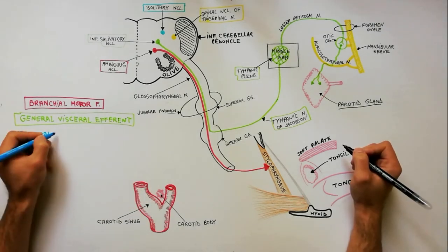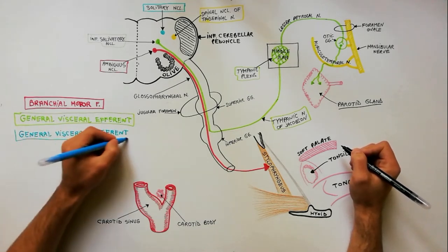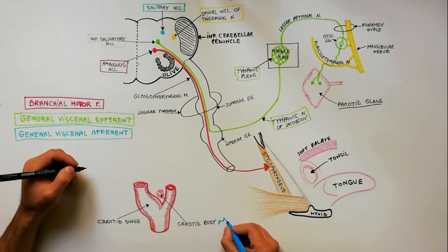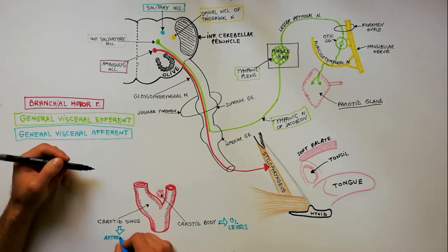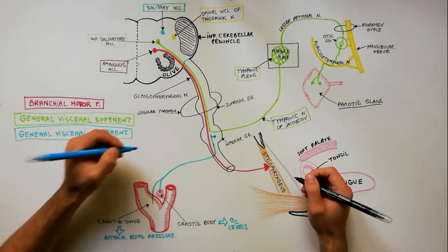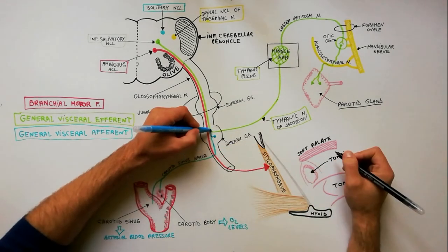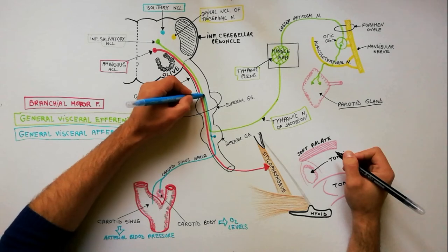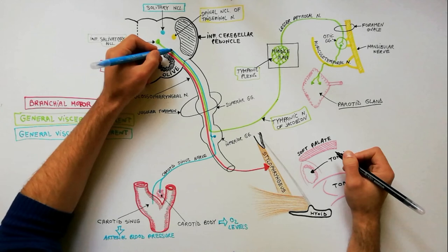With the blue color we will indicate the general visceral afferent fibers. Chemoreceptors from the carotid body monitor oxygen levels in circulating blood, and baroreceptors in the carotid sinus monitor arterial blood pressure. These sensations are relayed via the carotid sinus nerve towards the inferior ganglion, where the nerve cell bodies are located. From these neurons, central processes are carried within the glossopharyngeal nerve to reach the caudal part of the nucleus solitarius.